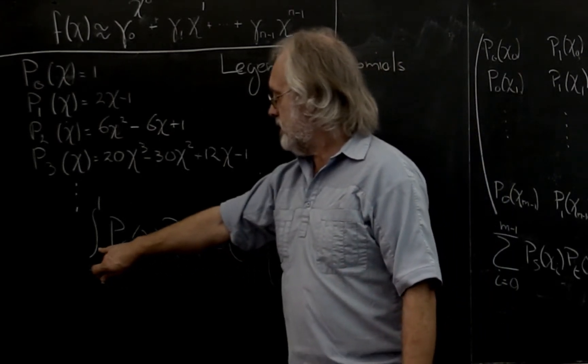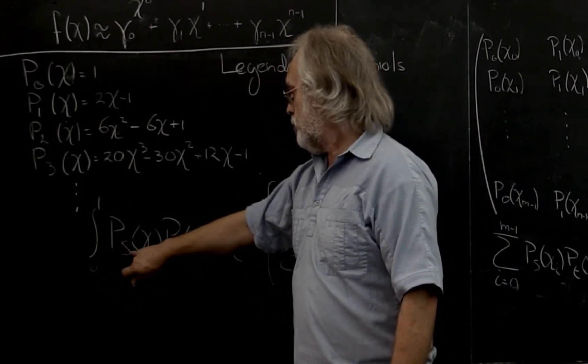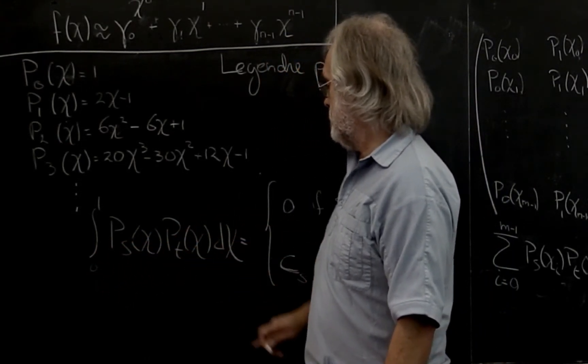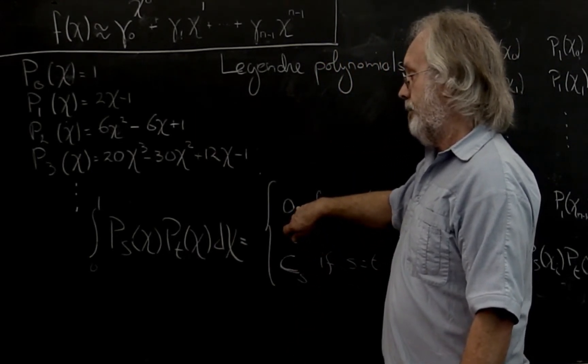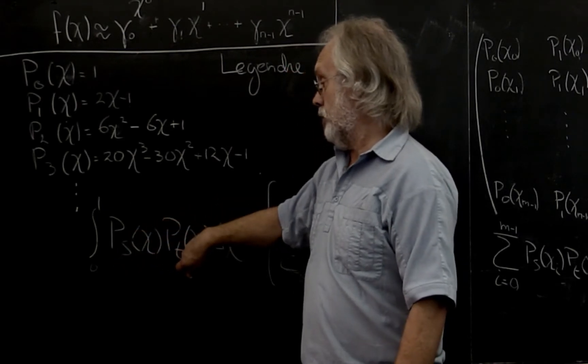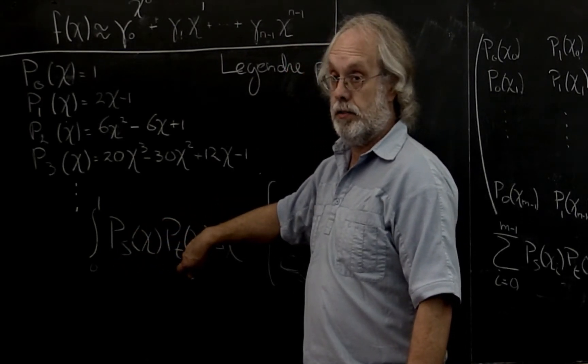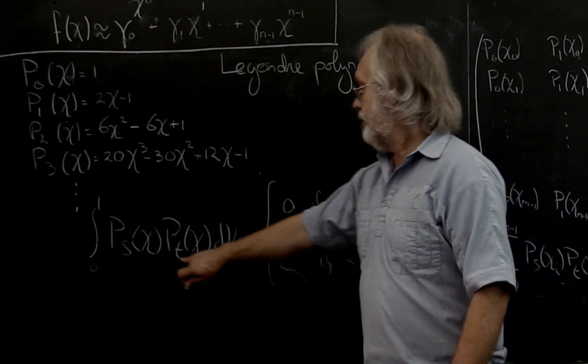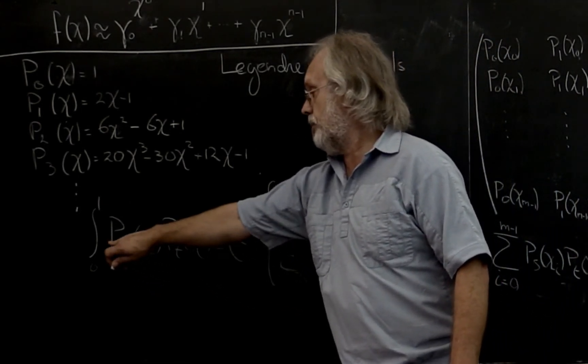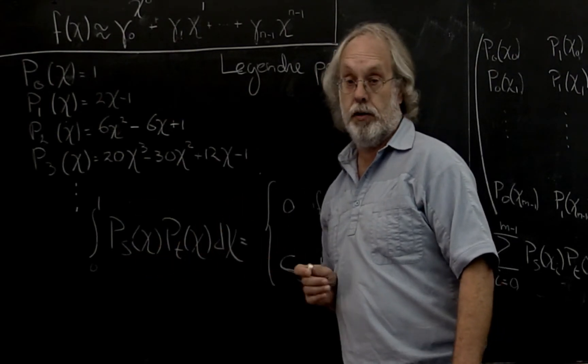And they have the property that if you integrate the product of any two of these, then either you end up with 0 if you're not integrating the same two polynomials multiplied together, or some constant that depends on s if s is equal to t. In other words, if you integrate the square of the polynomial.